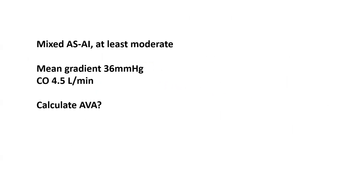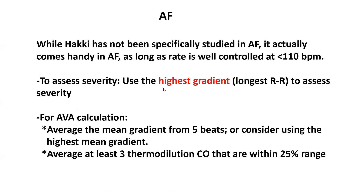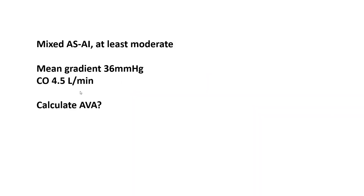Another application: mixed aortic stenosis and aortic insufficiency that appears at least moderate on echo. Mean aortic valve gradient is 36 mmHg and cardiac output is 4.5 L/min. What is the valve area? On the spot: 4.5 divided by the square root of 36 (which is 6) gives less than 1 cm². But there is a caveat with mixed AS/AI.